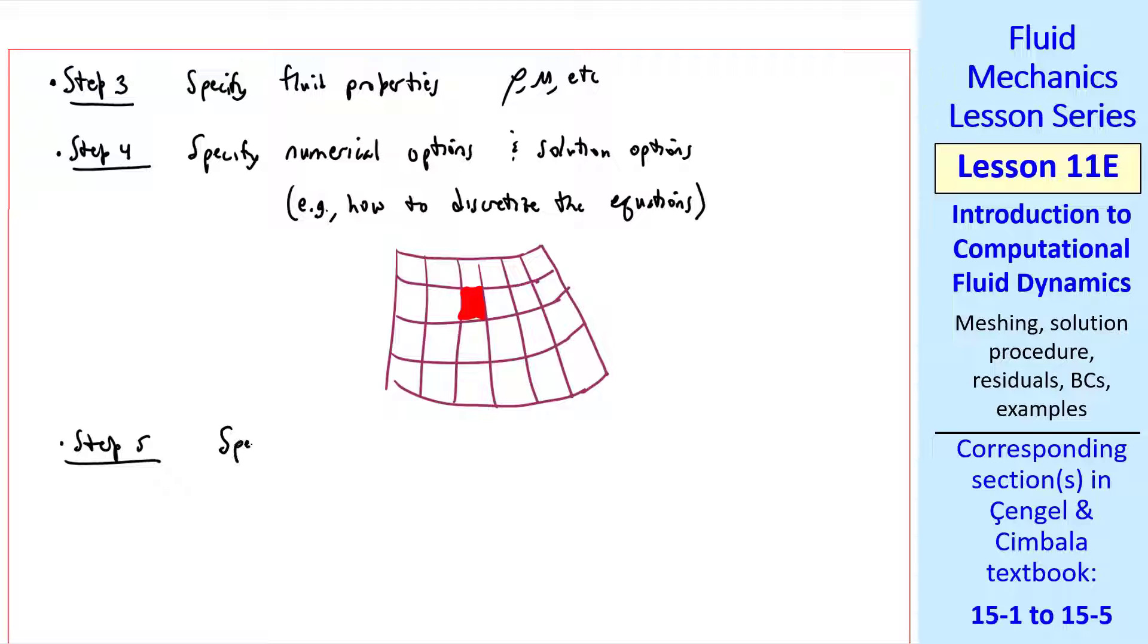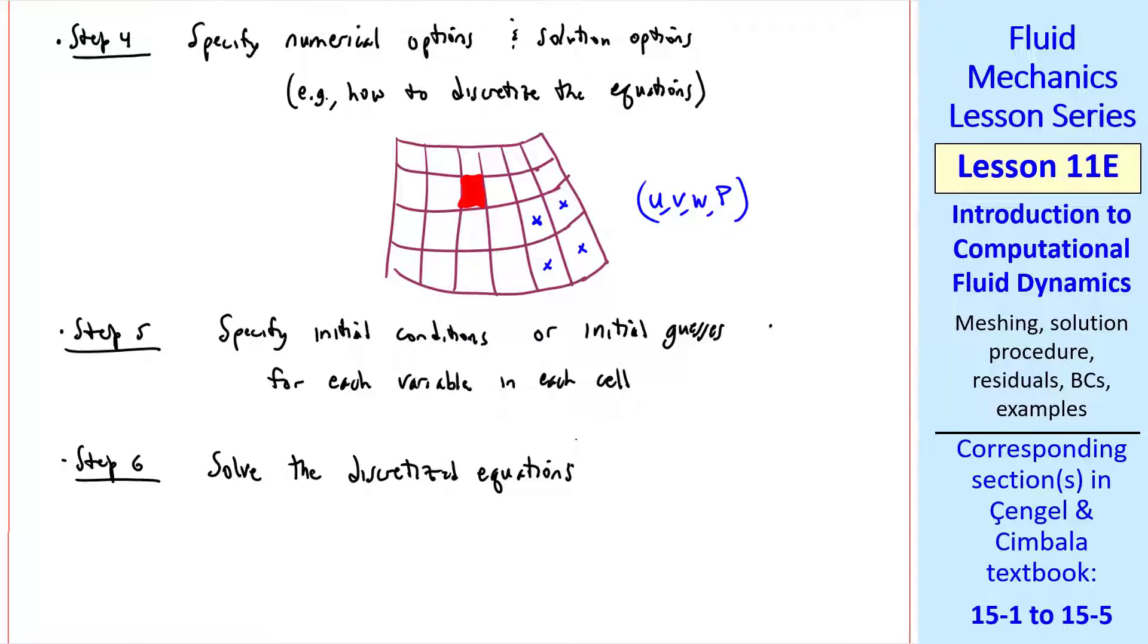Step 5 is to specify initial conditions or initial guesses for each variable in each cell. In other words, U, V, W, and P. And depending on the algorithms, these are typically set at the center of each cell.